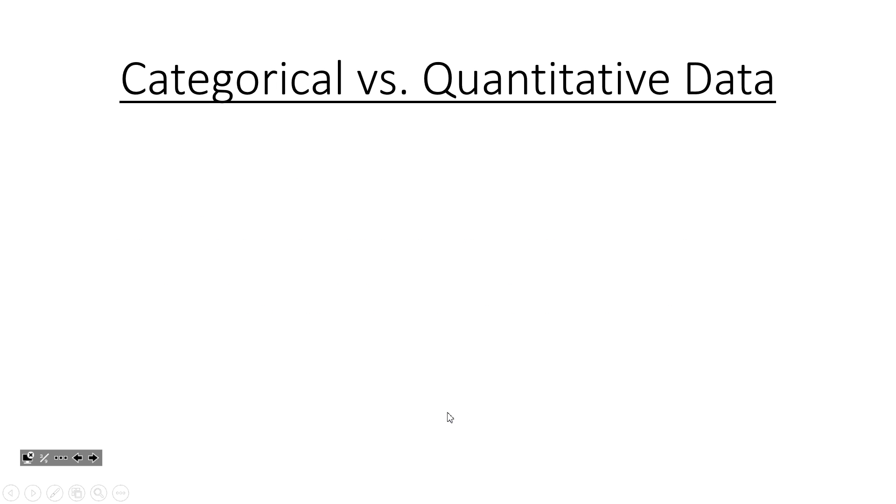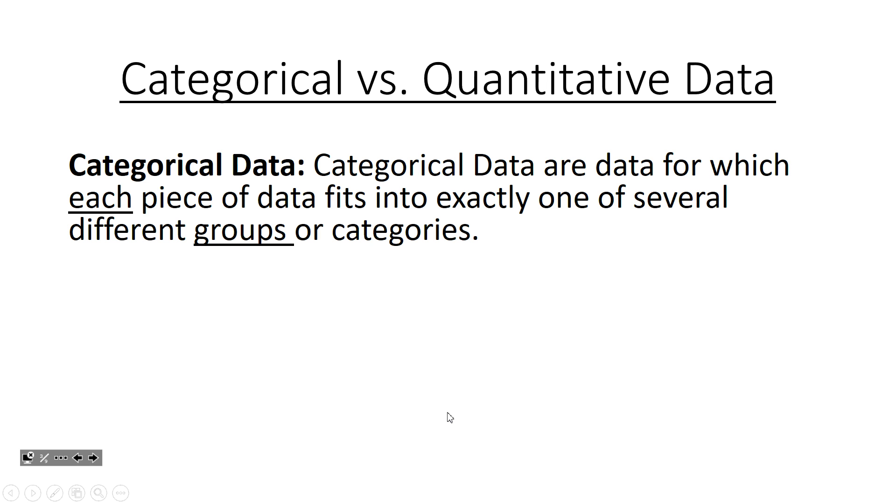Now along with this we need categorical versus quantitative data. Categorical data are data for which each piece of data fits into exactly one of several different groups or categories. As the name suggests, these are categories, so it's either in this category or this category or this category. These might have more to do with qualities than quantities.